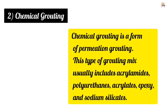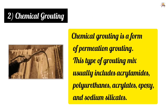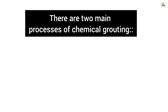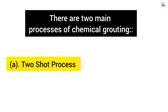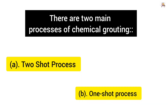2. Chemical grouting. Chemical grouting is a form of permeation grouting. This type of grouting mix usually includes acrylamides, polyurethanes, acrylates, epoxy and sodium silicates. There are two main processes of chemical grouting: the two-shot process and the one-shot process.